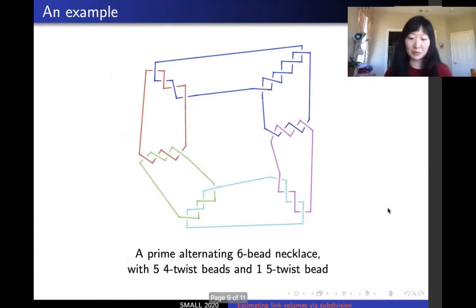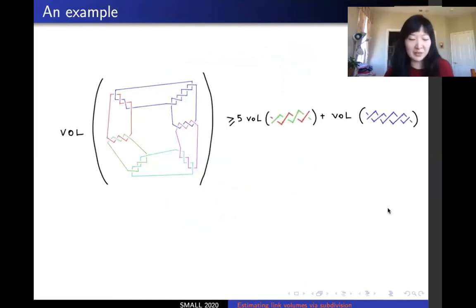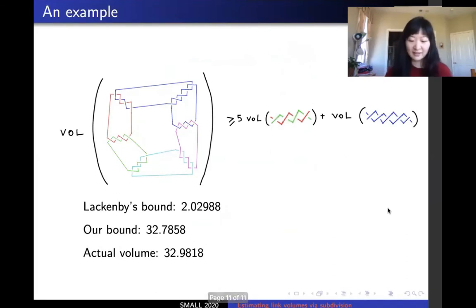Let's look at an example of what we've been talking about. Say we want to know the volume of this link. It is prime and alternating, so the criteria for Lackenby's bound are satisfied. It is also a six bead necklace with two types of beads in it, five beads with four twists and one bead with five twists. So, with a table of the volume of the different beads, just by looking at the picture and doing some addition, I can give a lower bound on its volume. In this case, Lackenby bound yields a volume of 2.02988, our bound yields a volume of 32.7858, while the actual volume turns out to be 32.9818. In this and many other examples, our bound seems to graze the actual volume really closely.